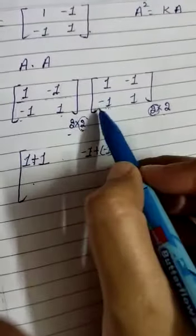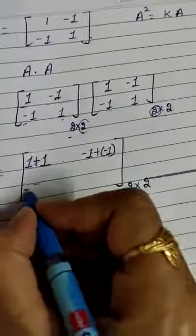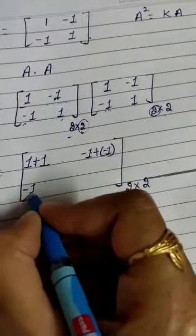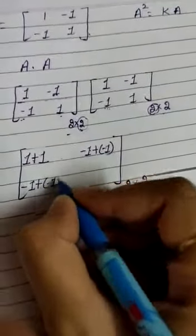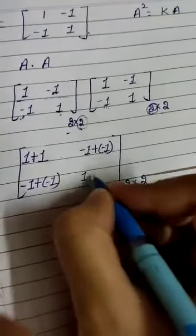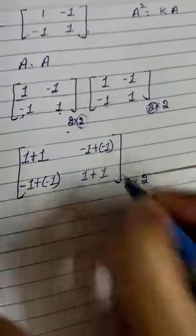For the third element: second row times first column: (−1)×1 = −1, plus 1×(−1) = −1, giving −2. For the fourth element: second row times second column: (−1)×(−1) = 1, plus 1×1 = 1, giving 2.